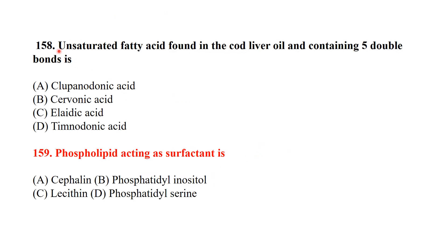MCQ 158: Which unsaturated fatty acid is found in cod liver oil and contains five double bonds? The example is timnodonic acid. Timnodonic acid has five double bonds and is an unsaturated fatty acid found in cod liver oil.